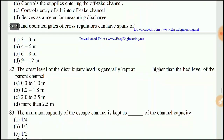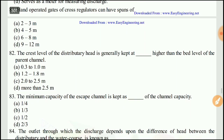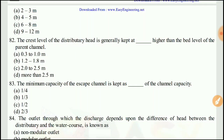Question 81: The hand-operated gate of the cross regulator can have a span of — the right answer would be C, six to eight meters.